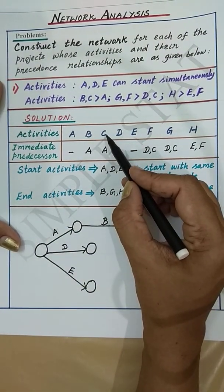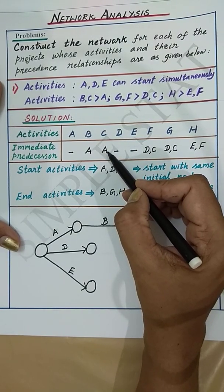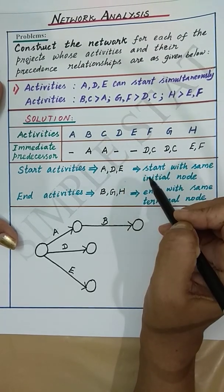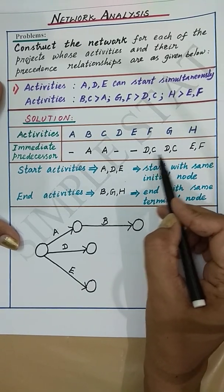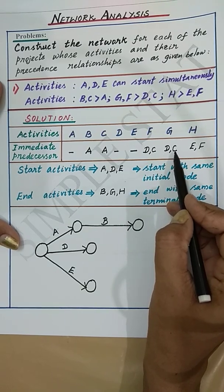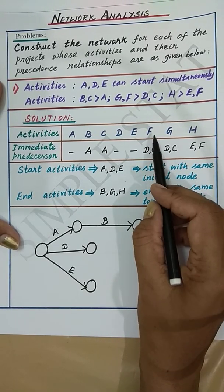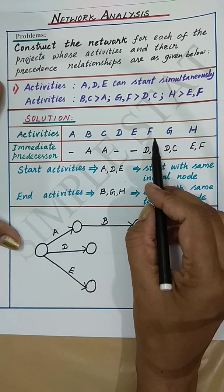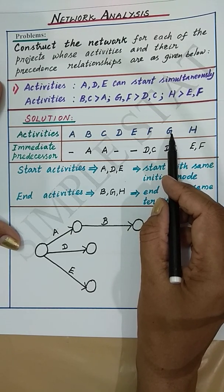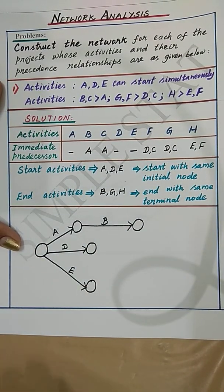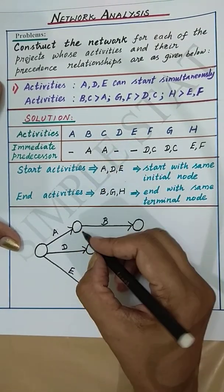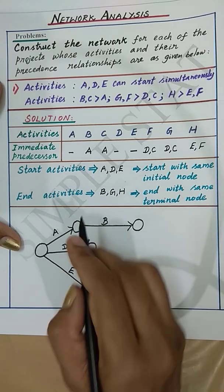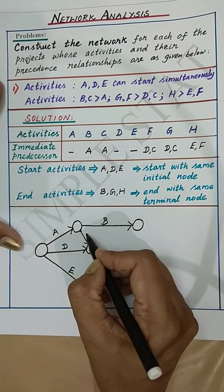Next is activity C. Activity C can start after the completion of activity A. Before drawing activity C, we have to check if C is a predecessor for any other activity. From the table, we observe that activity C along with activity D occurs as the predecessor for activities F and G. This means that only after completion of C and D will activities F and G start. That is, activity C starts after activity A and ends where activity D ends. This is activity C.